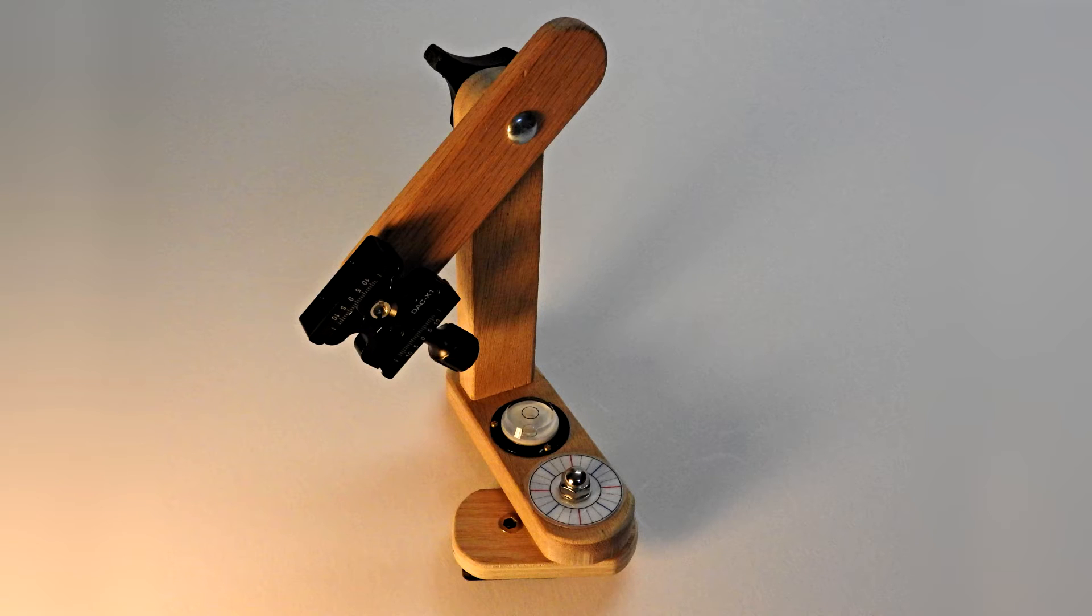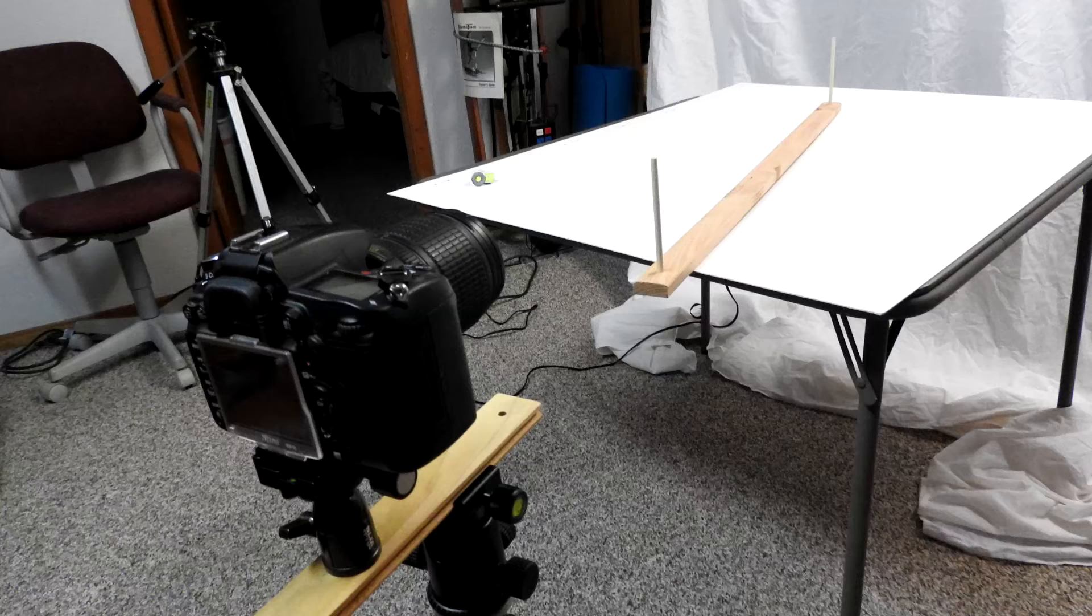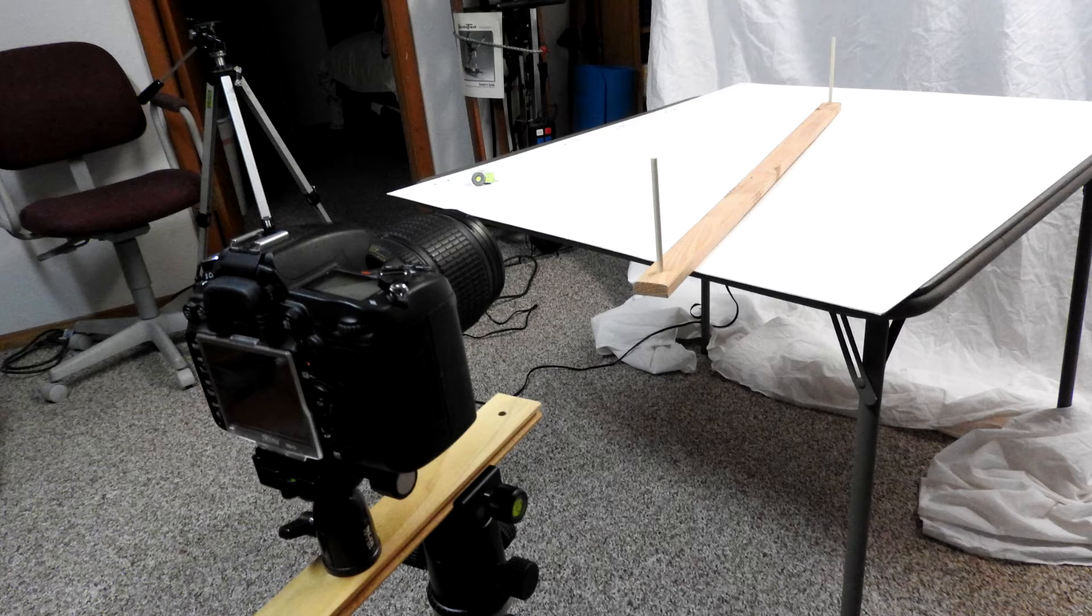Two critical measurements that we need to make are the nodal distance and the distance from the base of the camera to our horizontal rotation center. This is the setup that we're going to use to find what the nodal distance of the camera is. The camera is mounted rigidly on one tripod mount and the rail is mounted on a second tripod mount. The rail will rotate around the pan center of the second tripod mount.